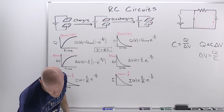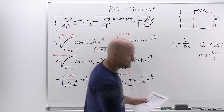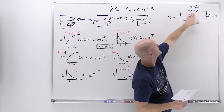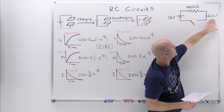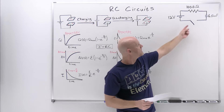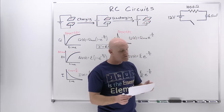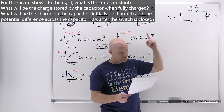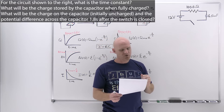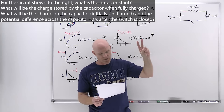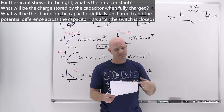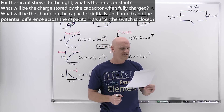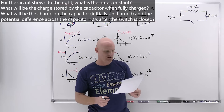Now for a worked example: the circuit shown has a 12-volt battery, a 100-ohm resistor, and a 6.0-millifarad capacitor with an initially open switch. The questions are: What is the time constant? What will be the charge stored by the capacitor when fully charged? And what will be the charge on the initially uncharged capacitor and the potential difference across it 1.8 seconds after the switch is closed?